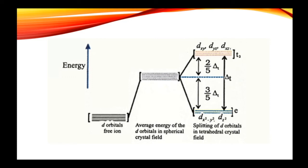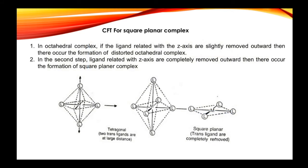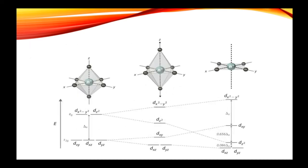In square planar complexes, if you first remove the ligands from the z-axis, there will be only four ligands left in the metal plane. The ligands related to the z-axis are completely removed, leading to formation of square planar complexes. The orbitals involving the z-axis will experience less repulsion from the incoming ligands, so their energy will be lowered.